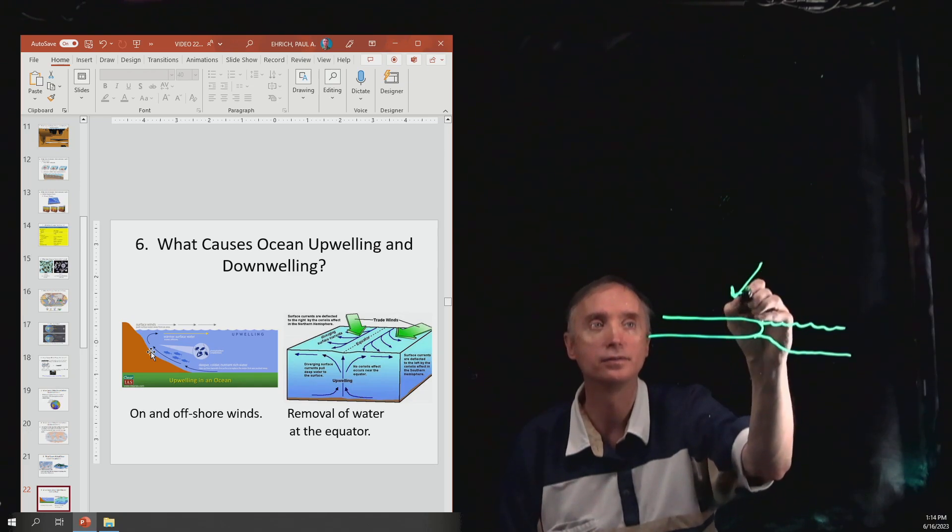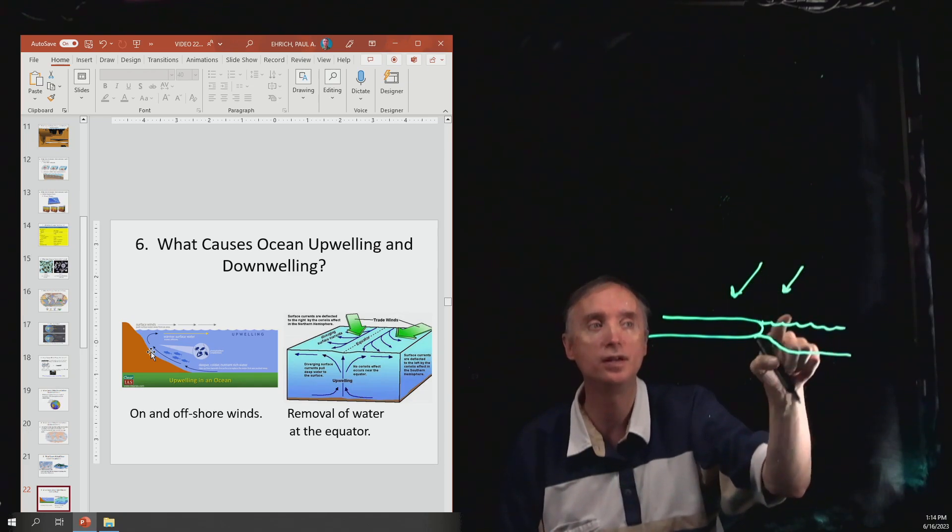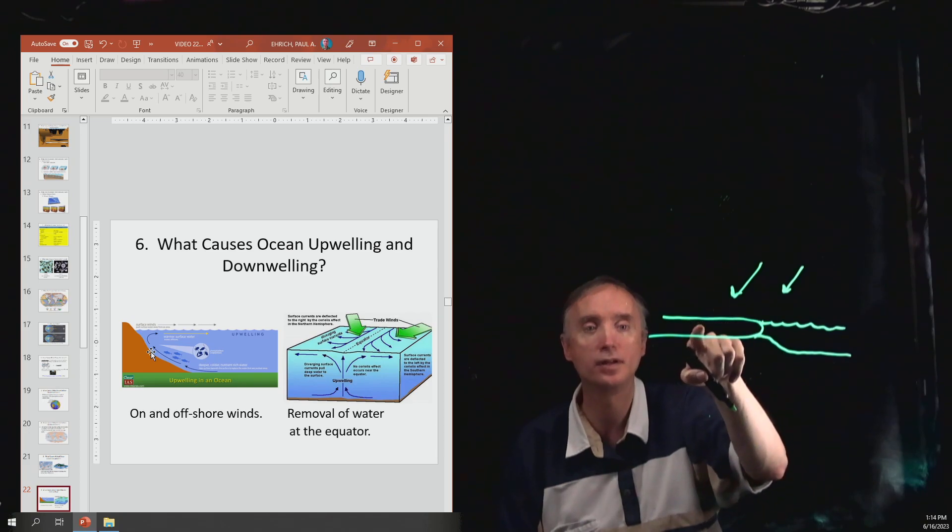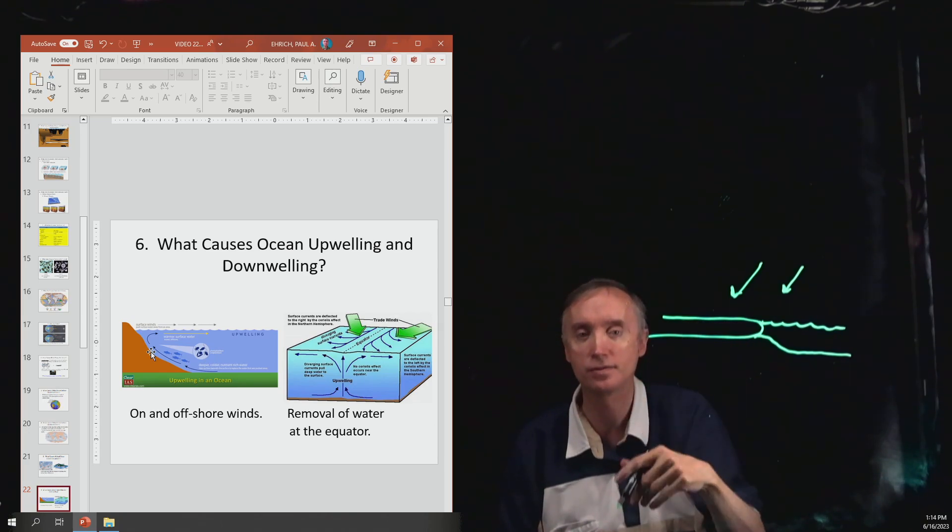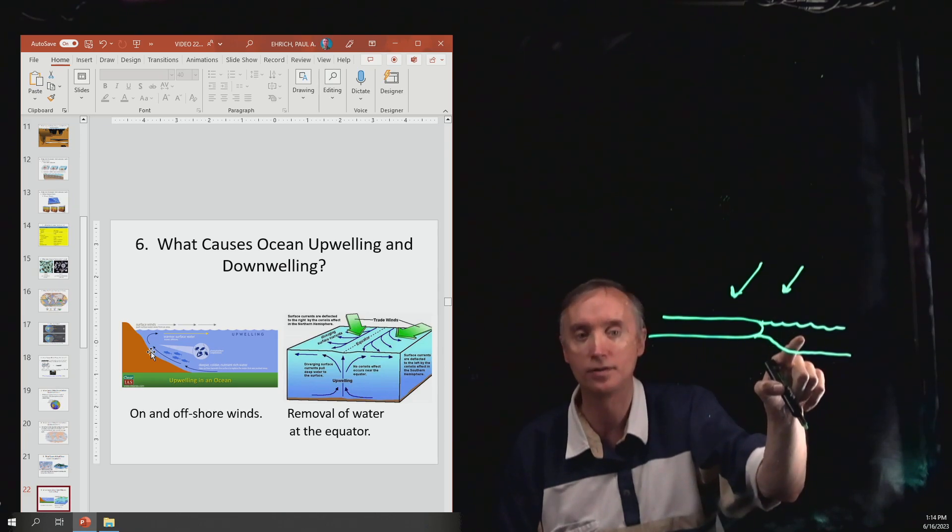When sunlight comes down it's going to heat up the water and also heat up the continent, but a continent has less specific heat than what water does.